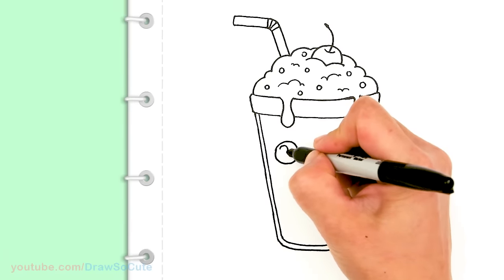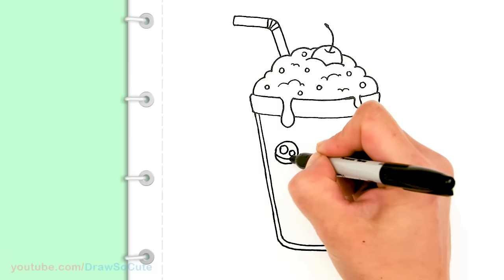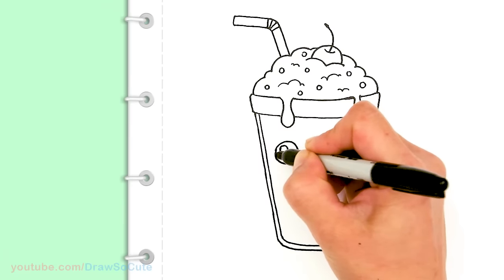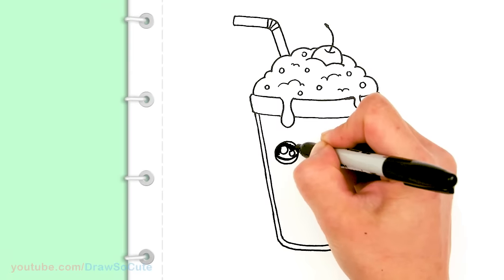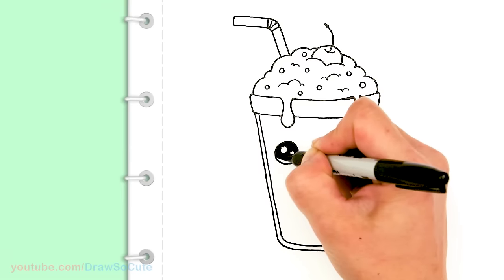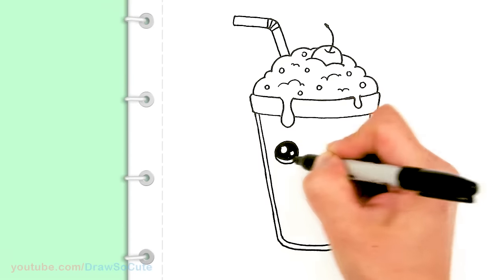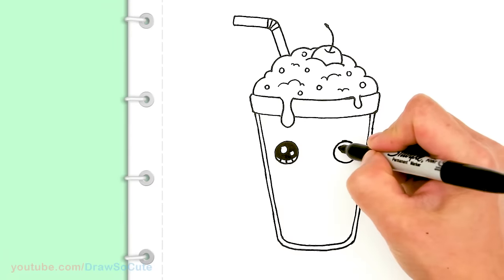And let's make them draw so cute eyes. So two small circles inside for highlights. And the curved line at the bottom. And shade in the top. And the lines at the bottom. Okay so same thing on this side.